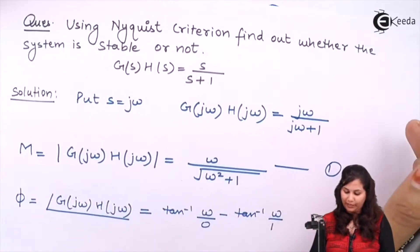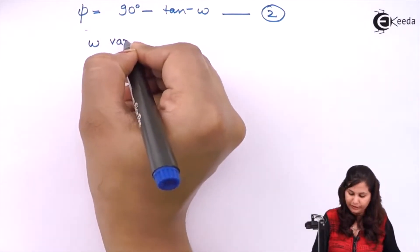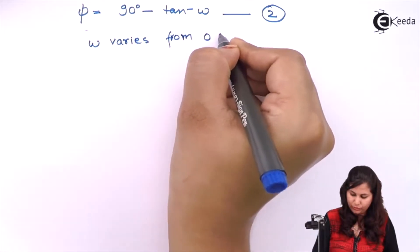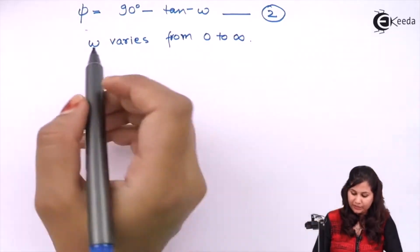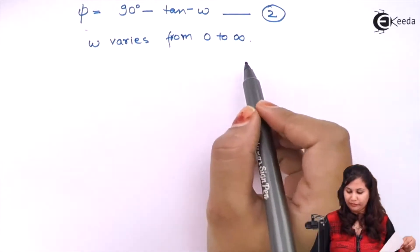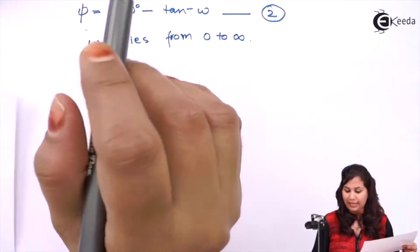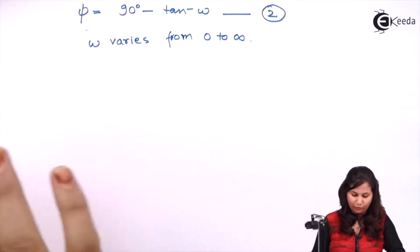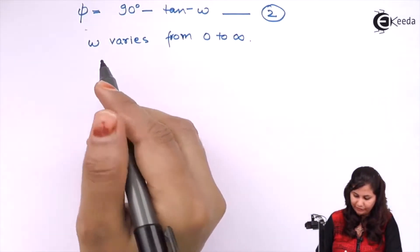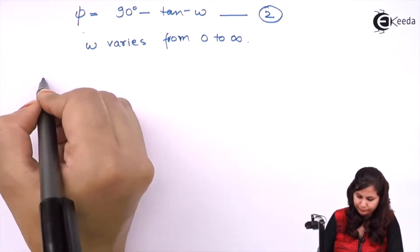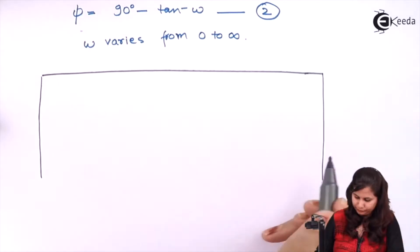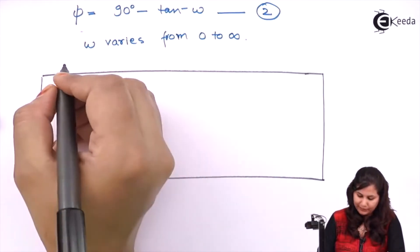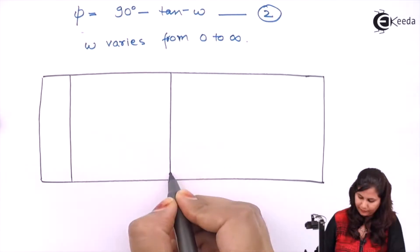We will vary the value of ω from 0 to infinity. For various values of ω between 0 and infinity, we will calculate the magnitude and the phase angle, and then plot the polar plot for this system. Let's form a table. Our transfer function is s upon s plus 1. We will vary ω with values: 0, 0.1, 0.3, 1, 1.5.